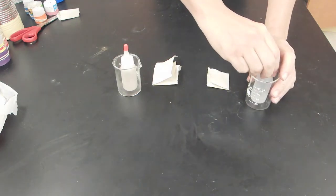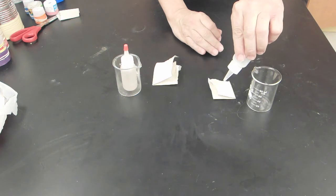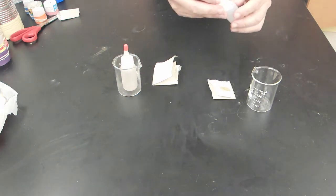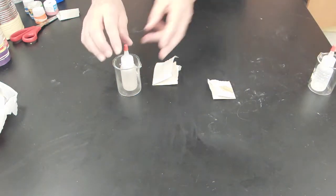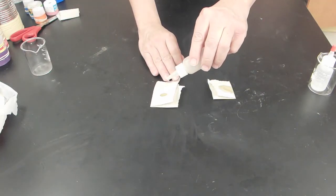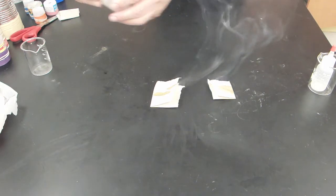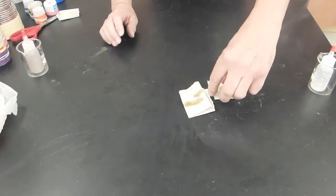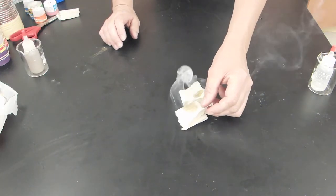We're going to use a reaction between the vapors of muriatic or hydrochloric acid and ammonium hydroxide which is ammonia dissolved in water. Just two drops of each chemical are placed on paper towels and as the chemicals evaporate, the reaction takes place and a white precipitate called ammonium chloride forms and that's going to be our smoke.